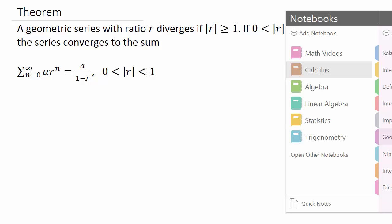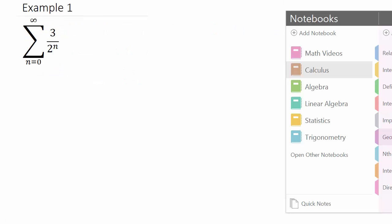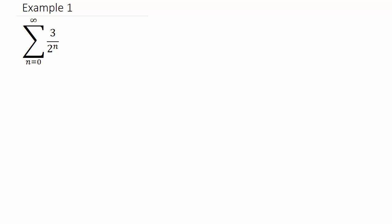Let's look at our first example. Here I have a summation n equals zero to infinity of three over two to the n.